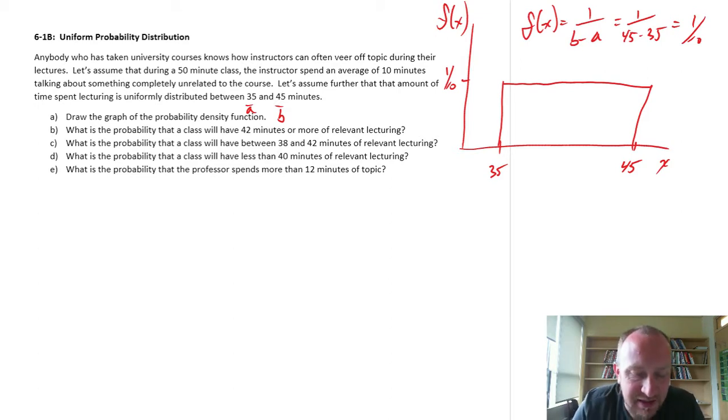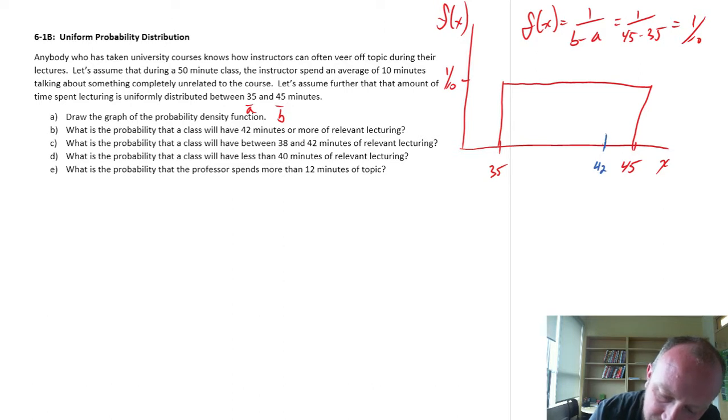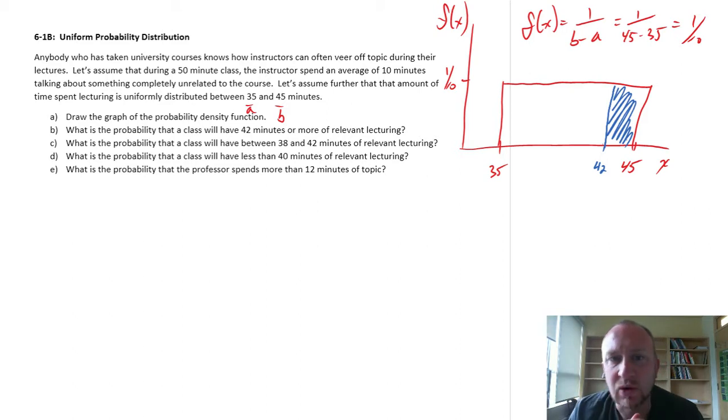What is the probability that a class will have 42 minutes or more of relevant lecturing? So here we're going to look at calculating the area under this curve, because this is how probabilities are calculated. When we're working with density functions, probabilities are represented by the area under the curve. So if we have a value, let's say 42 is right here. So now we're looking at calculating what is this area here. Now the question says 42 minutes or more of relevant lecturing. But given that it's distributed between 35 and 45, anything beyond 45, the density function takes on a value of 0.